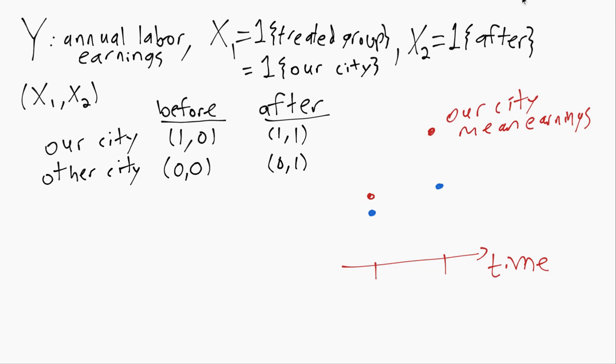then what the difference in differences does is it makes this assumption, which is a strong assumption and is not always true, that if our city had not changed minimum wage we would have had the same increase in earnings that the other city had.